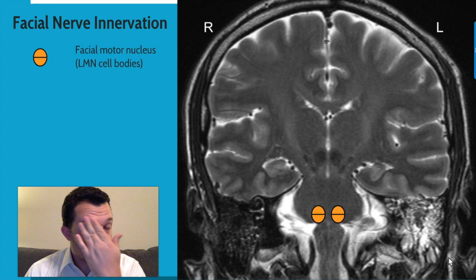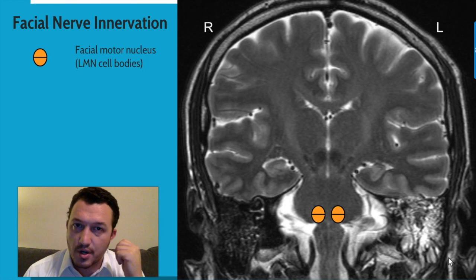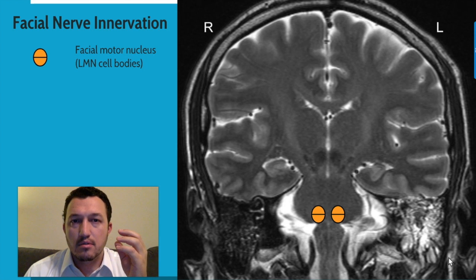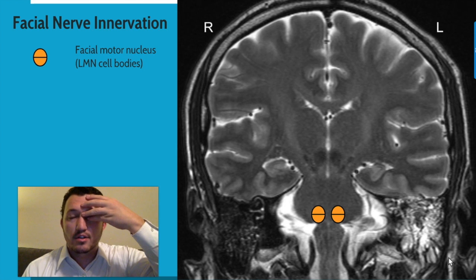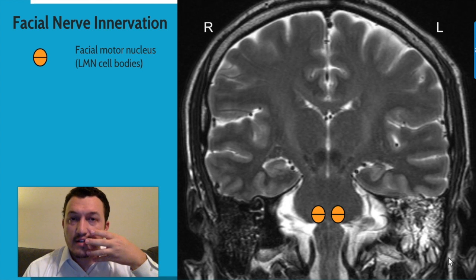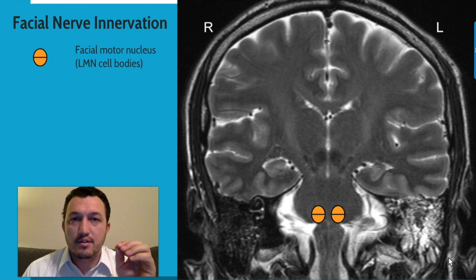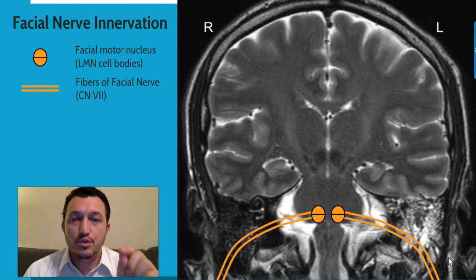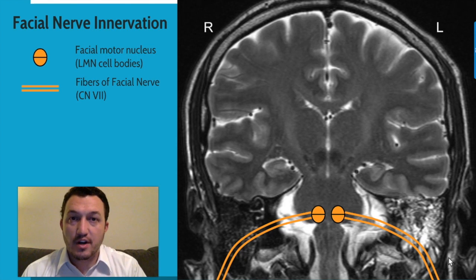For the purposes of explaining this somewhat confusing concept, I have split the nucleus into two halves: an upper half and a lower half. This is to help illustrate that some of those lower motor neurons that travel with the axons through the facial nerve innervate the muscles of the upper face including eye closure, and some of those lower motor neurons have axons that travel and innervate the lower face, not including the eye. I've drawn two different fibers coming off to represent the facial nerve — some axons traveling to muscles of the upper face and some to the lower face.